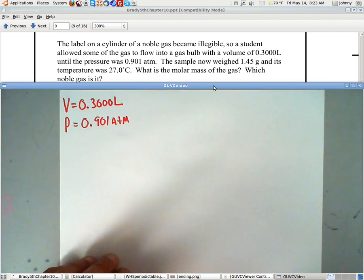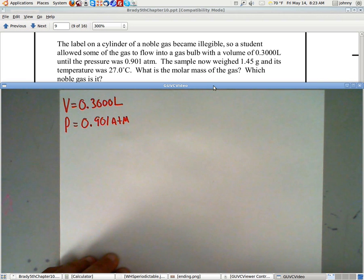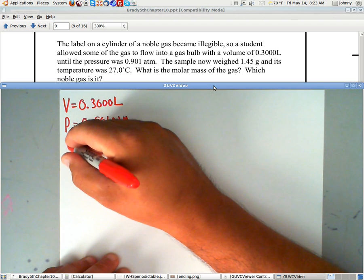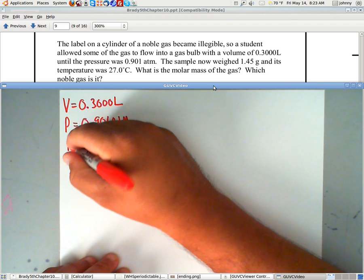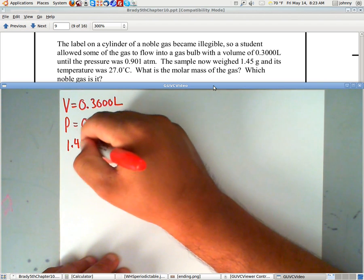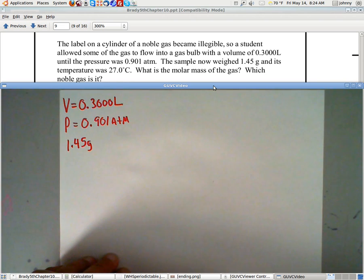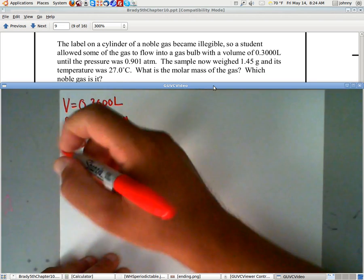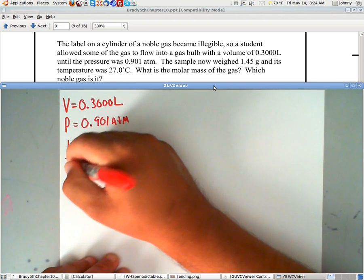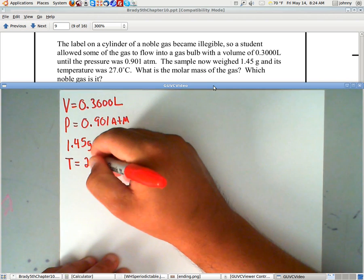Now, it says the sample now weighed 1.45 grams. Okay, so we've got 1.45 grams. And its temperature, so they give us a temperature, the temperature equals 27 degrees Celsius.